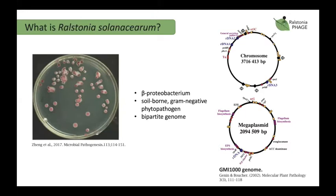Ralstonia solanacearum is a beta-proteobacterium, it's a soil-borne, gram-negative phytopathogen and it has a bipartite genome whereby genes associated with virulence can be found on both the chromosome and on the megaplasmid.